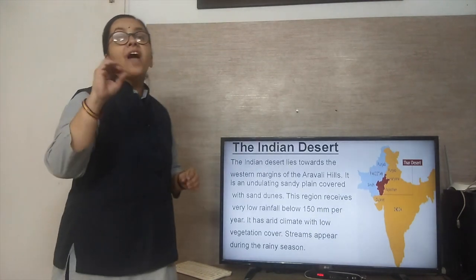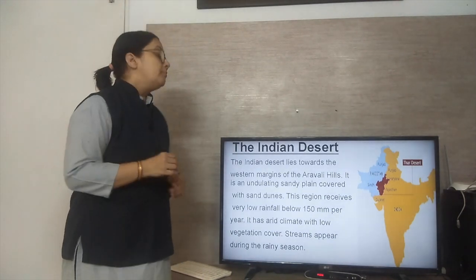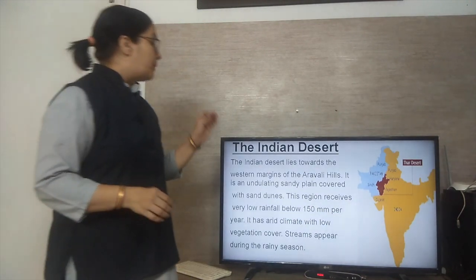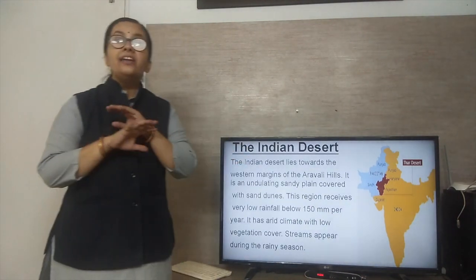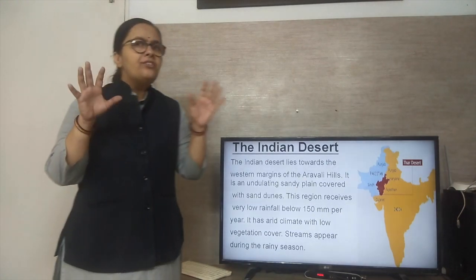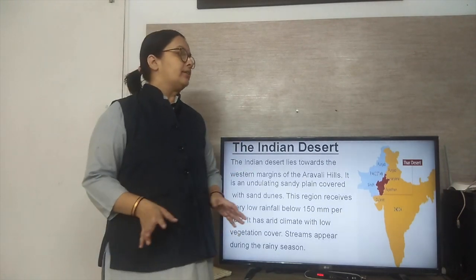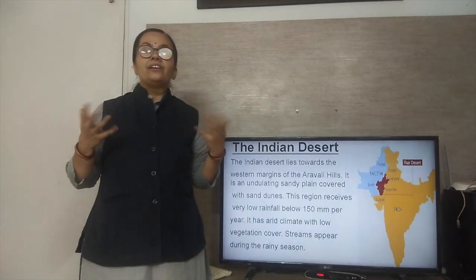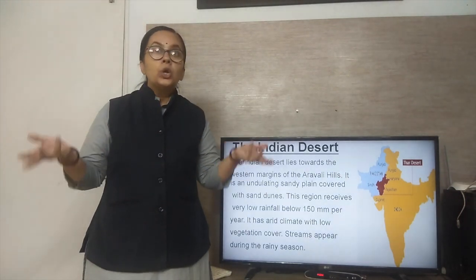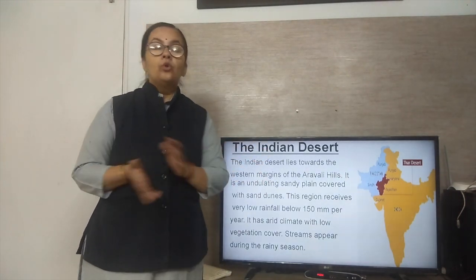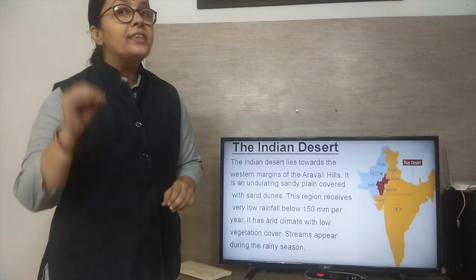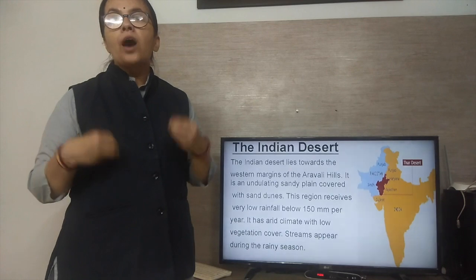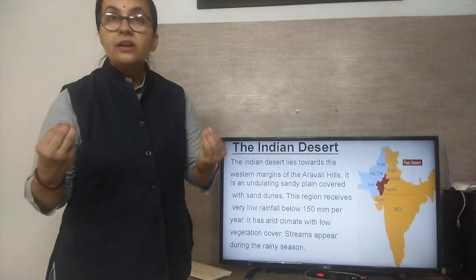This region receives very less rainfall — below 150 mm per year. It has an arid climate, meaning a very dry climate, with low vegetation cover. Only cacti are growing here and there is very little vegetation. But with the help of irrigation, we can grow some crops like jowar, bajra, and maize.